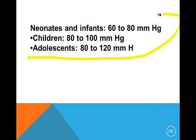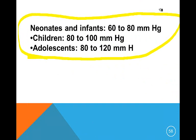Suction pressure: you cannot use adult suction pressure on a neonate or infant, or you can give them a pneumothorax. It's 60 to 80 mmHg for a neonate, 80 to 100 for a child, and 80 to 120 for an adolescent.